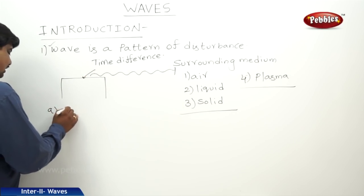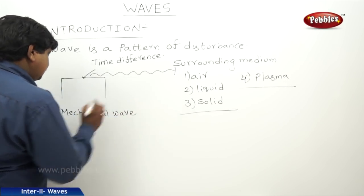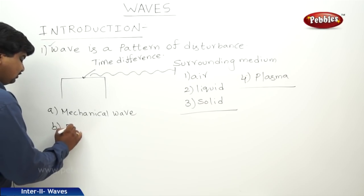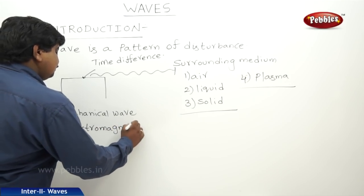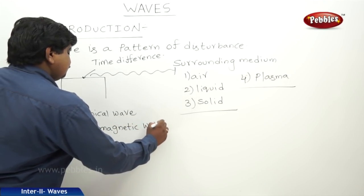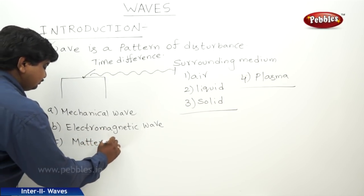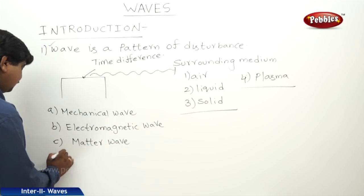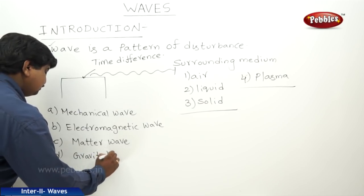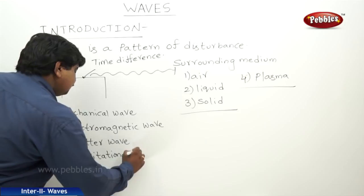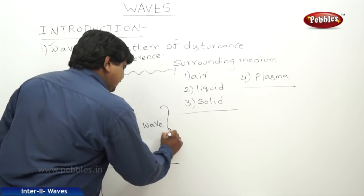The four types of waves are: first, mechanical wave; second, electromagnetic wave; third, matter wave; and the last one is gravitational wave. These are the classifications of waves.